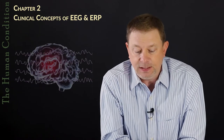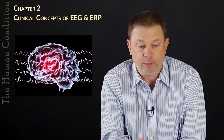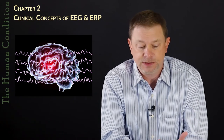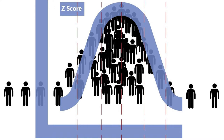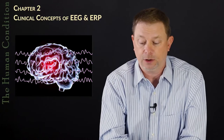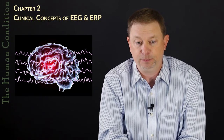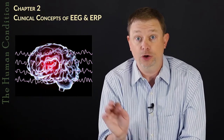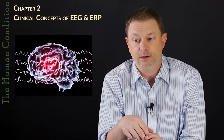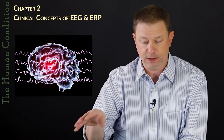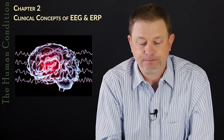EEG and QEEG work very, very well because the data is reproducible, comparable, and we have z-scores. Z-scores allow us to compare an individual to thousands of normal or healthy brains. We can also compare them to a standardized set of people with a known illness — such as traumatic brain injury cases — and perform discriminant analysis, which is a statistical measure.